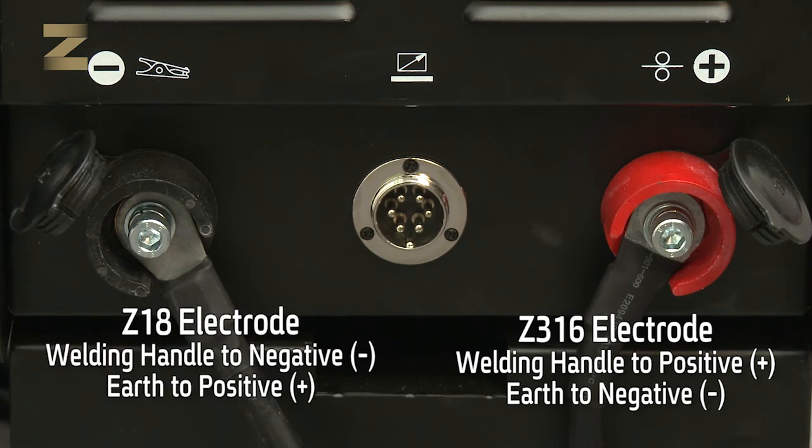And in the case of Zika 18, the welding handle is connected to the negative connector, and the earth connection handle is connected to the positive connector. Make sure to select the correct connection.